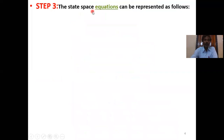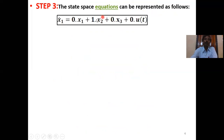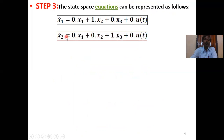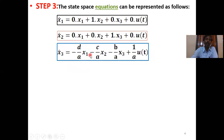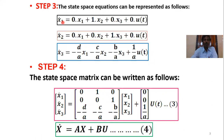The state space equations can be represented as follows: Ẋ1 = X2, Ẋ2 = X3, and Ẋ3 = −(D/A)·X1 − (C/A)·X2 − (B/A)·X3 + (1/A)·U(t).